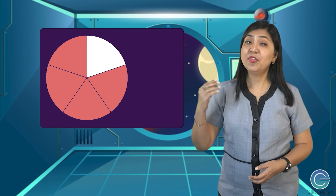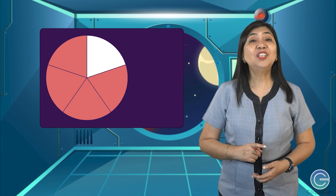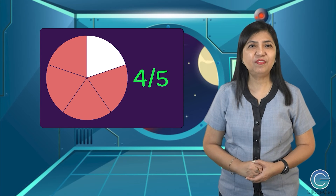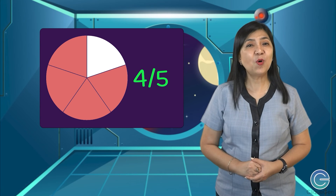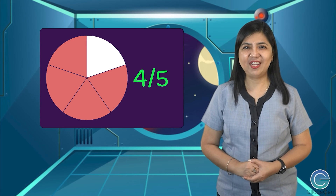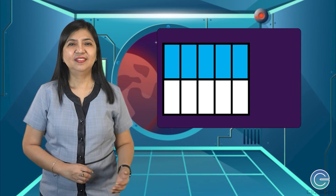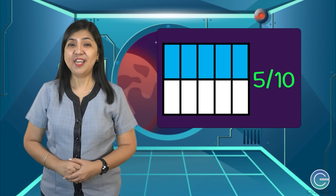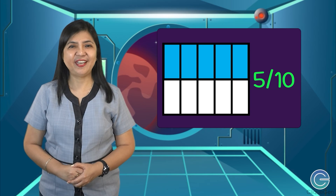Number three — that's right! The fraction from the shape is 4 over 5. Number four — very good! It is 5 over 10.